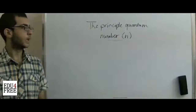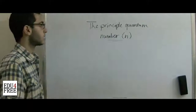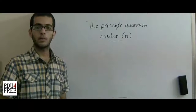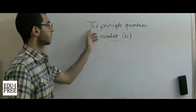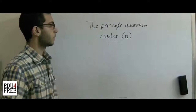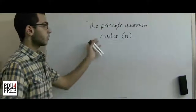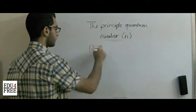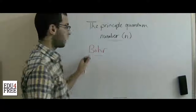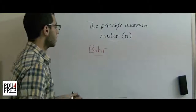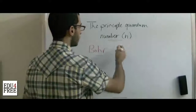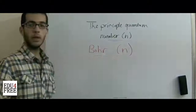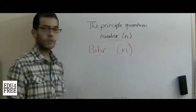Hello everybody and welcome back. Last time we said that we are going to talk about quantum numbers. There are four quantum numbers. The first one is called the principal quantum number, which was used by the scientist Bohr to describe the hydrogen atom's spectrum. He referred to this number as a small n.